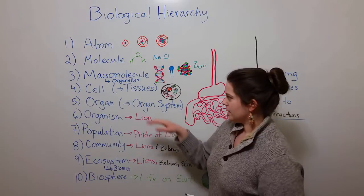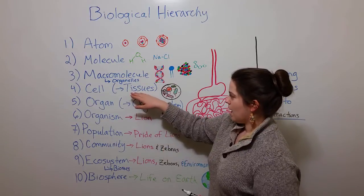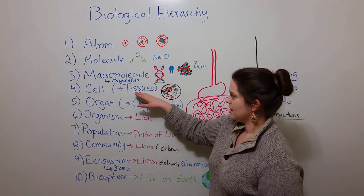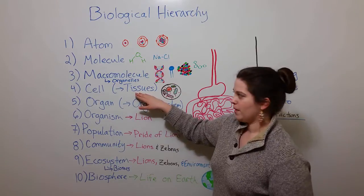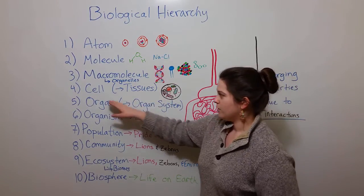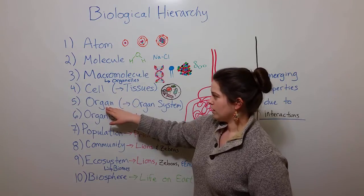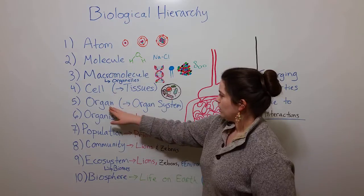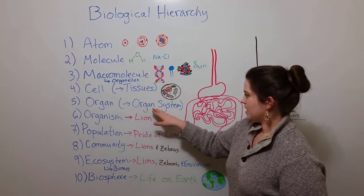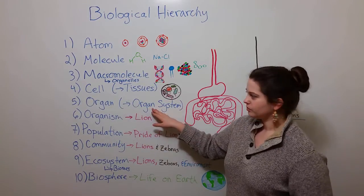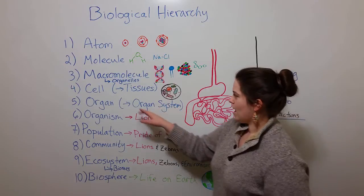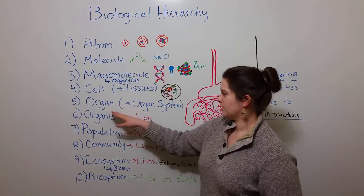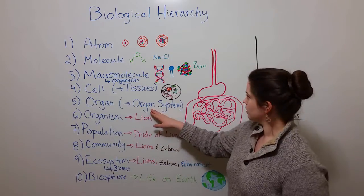Now, some lists also have tissues, which are groups of cells, as an additional level in the biological hierarchy. Others jump straight from cells to organs. Of course, organs are made up of tissues. Organs themselves can be classified into organ systems, meaning that you have tissues that interact to make organs functional. You have organs that interact to make organ systems functional.